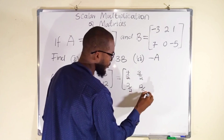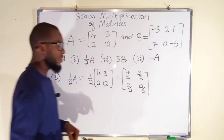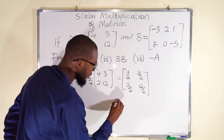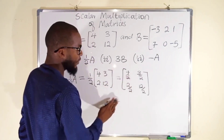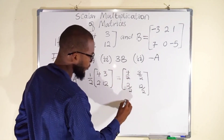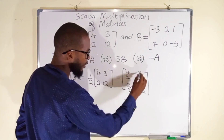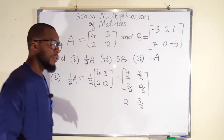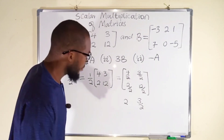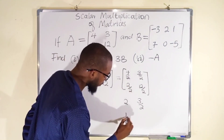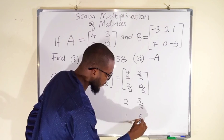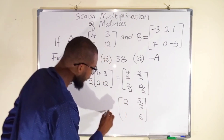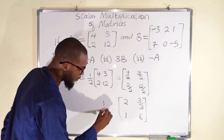We simplify and obtain our final answer. Half of 4 is 2; 2 over 2 is 1; 3 remains 3 over 2 because you can only simplify it to those small numbers; and 12 over 2 is 6. So finally, this is what we have as half of A: [2, 1, 3/2, 6].